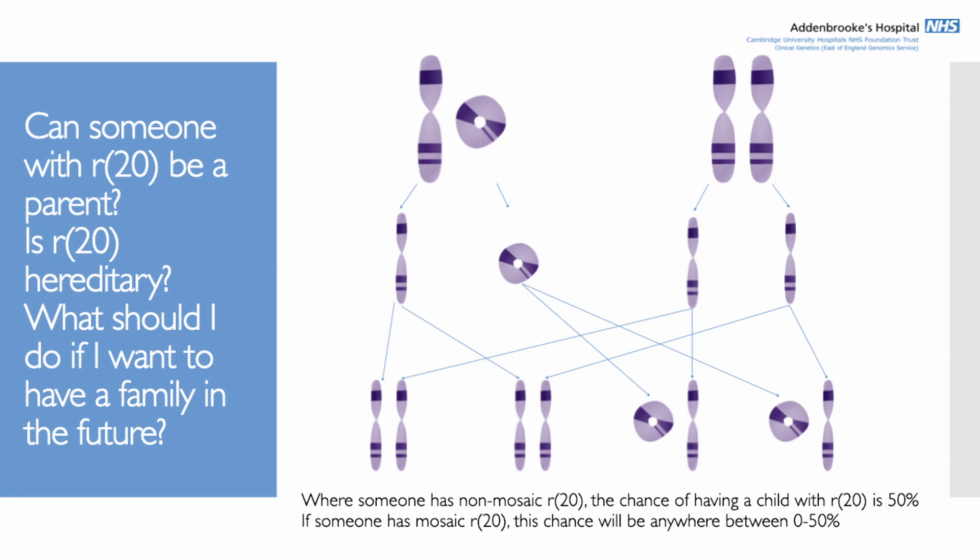If somebody has mosaic ring 20, the chance can be anywhere between zero and 50%, depending on whether ring 20 is present in their egg or sperm cells and in what percentage. Sometimes it's possible to look at sperm cells to test that, but it's tricky to assess before conception.